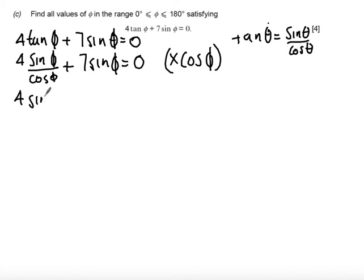So I get 4sinφ + 7sinφcosφ. Although it might not initially look like it, we're now in a really good position to solve this equation because this is a second order equation since I've got two functions multiplied together. I can actually factorise.